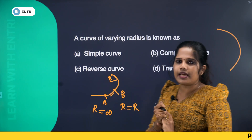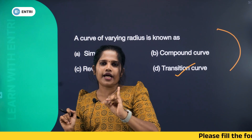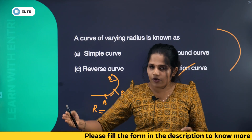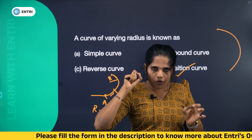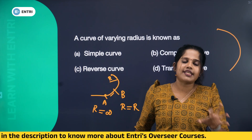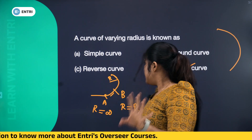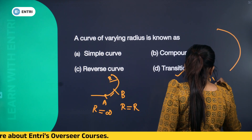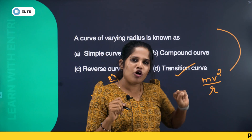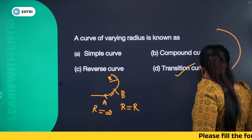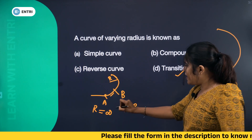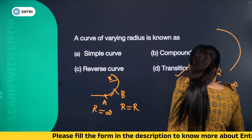We are talking about two things: the comfort of passengers and the centrifugal force. In circular motion, the centrifugal force formula is mv² by r. That means centrifugal force equals mv²/r. The R value at the starting point is infinity, so 1 by infinity equals zero — centrifugal force at the starting point is zero.